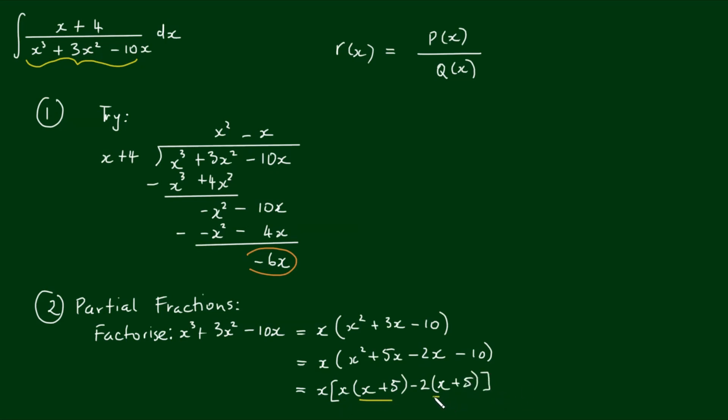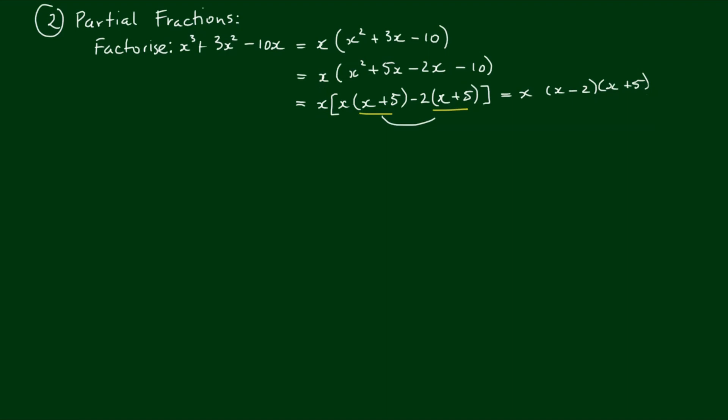With x plus 5 being a common factor, I can write that as x times x minus 2 times x plus 5. So now we can rewrite our integral as the integral of x plus 4 divided by x times x minus 2 times x plus 5.